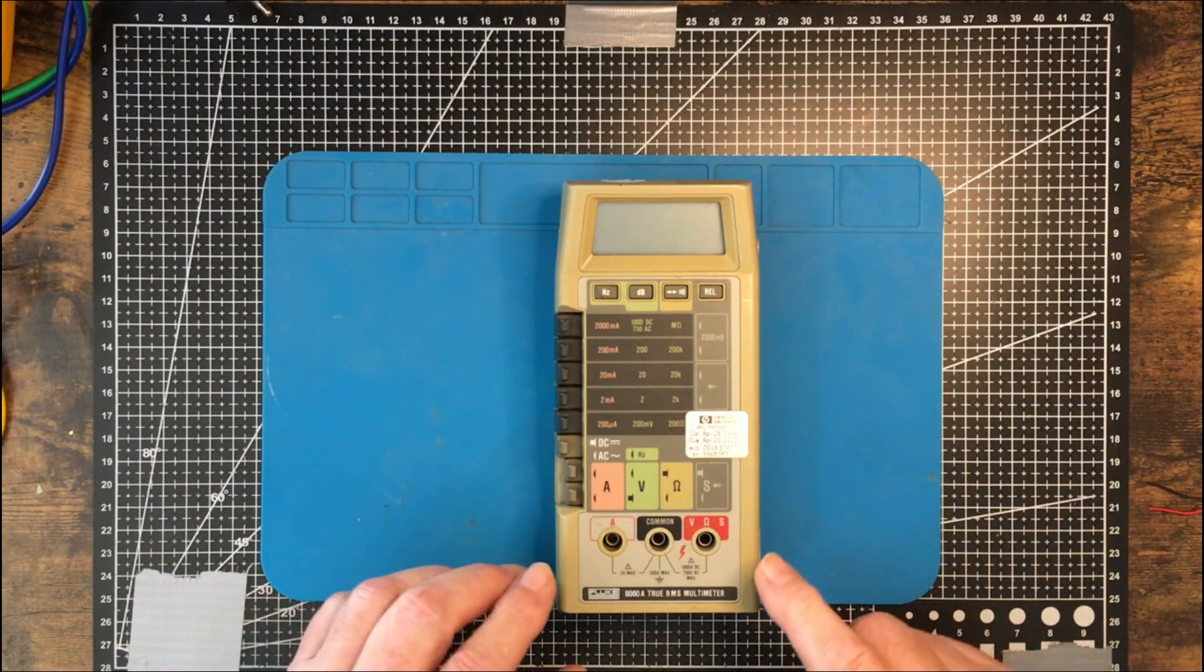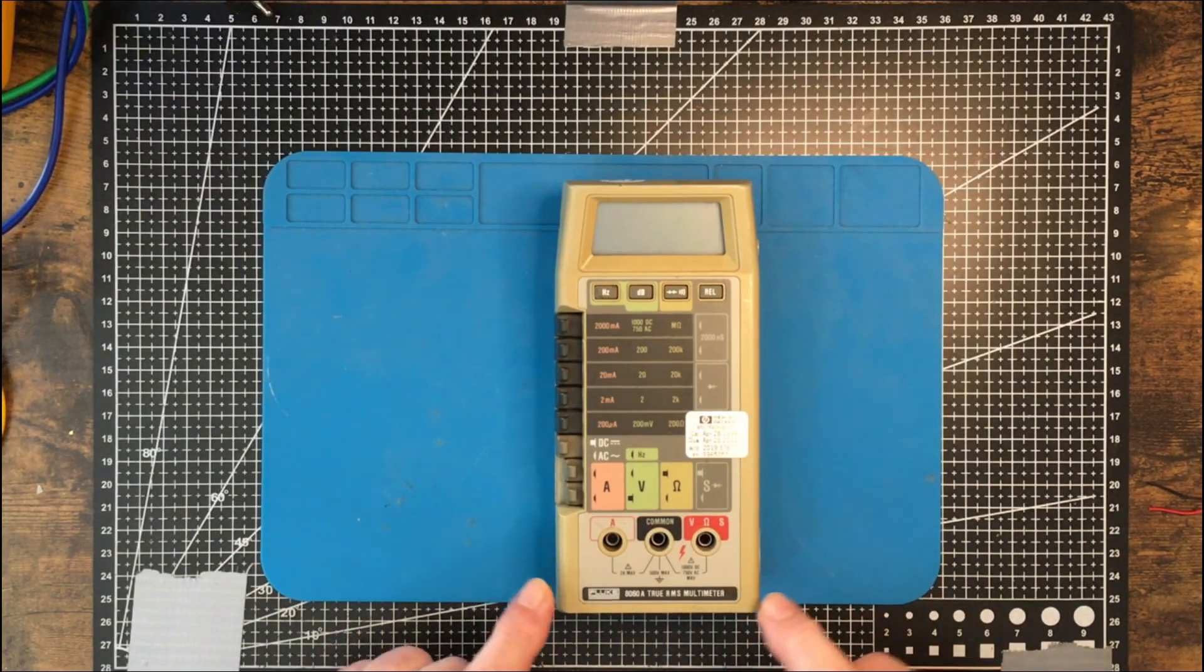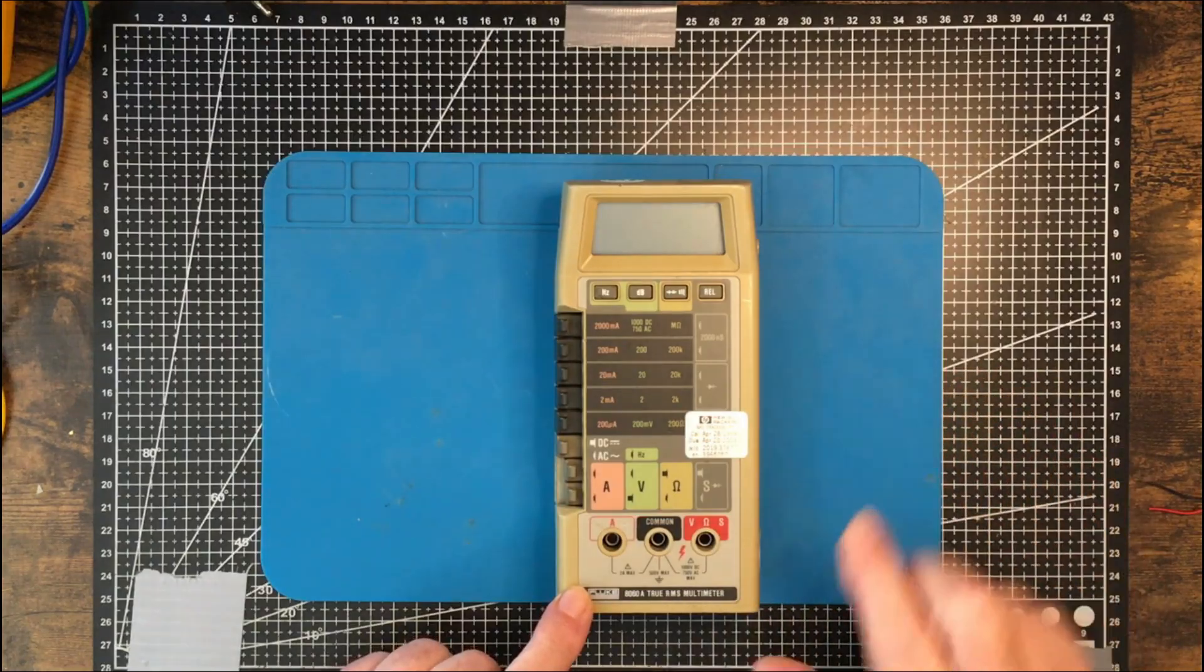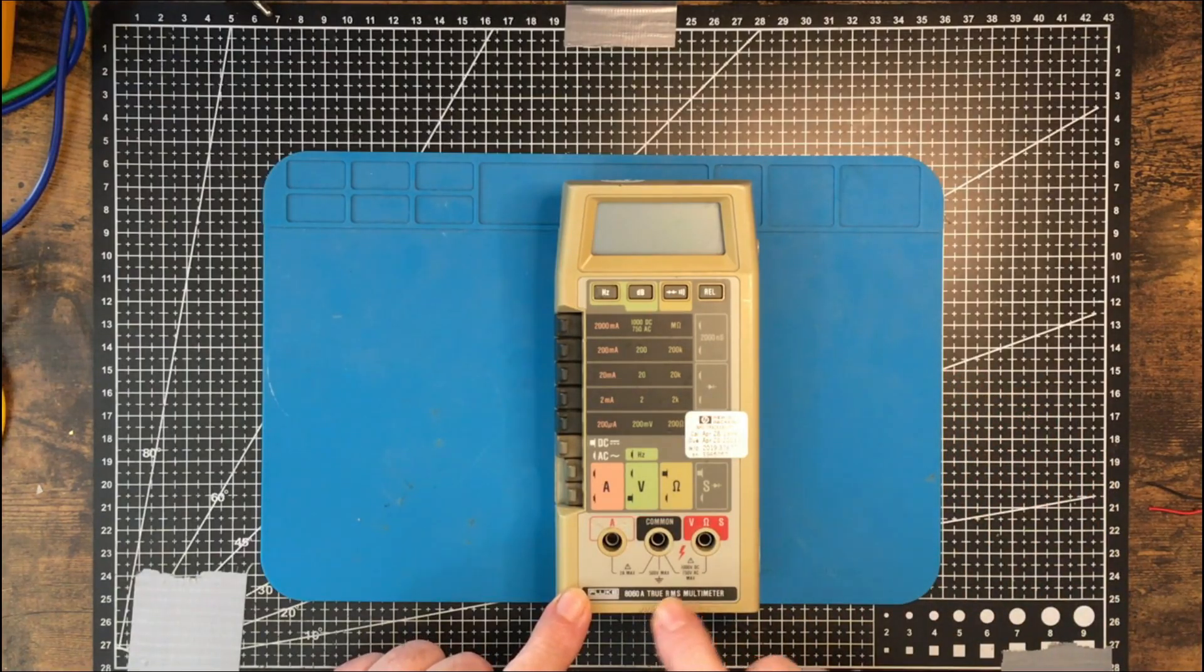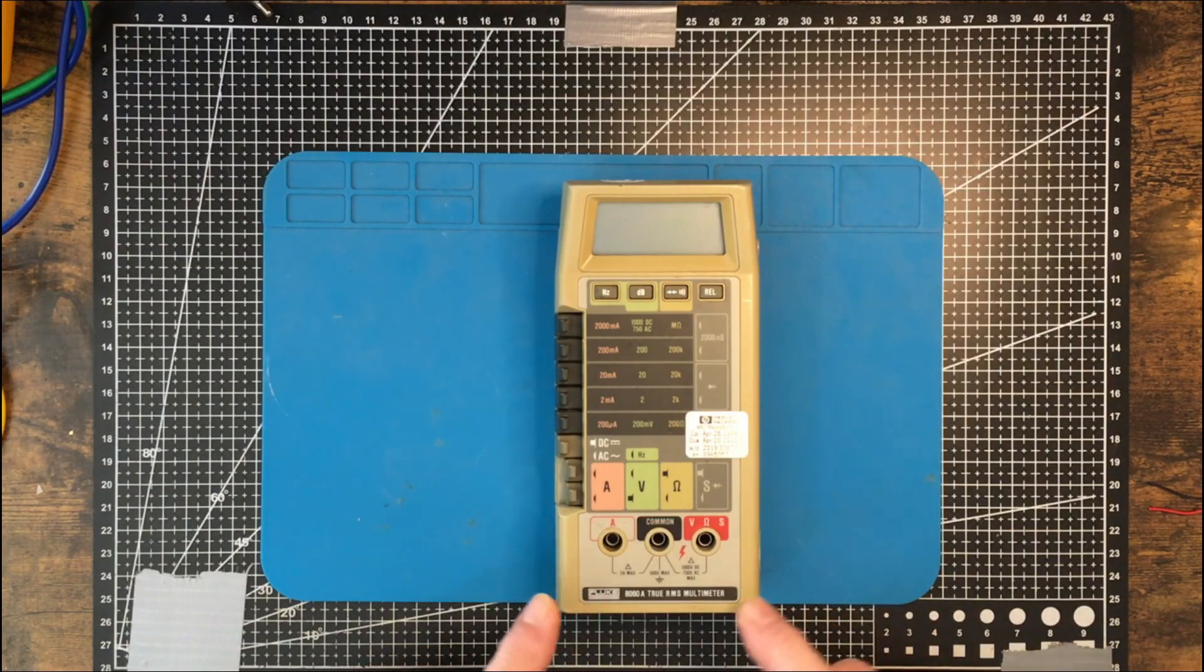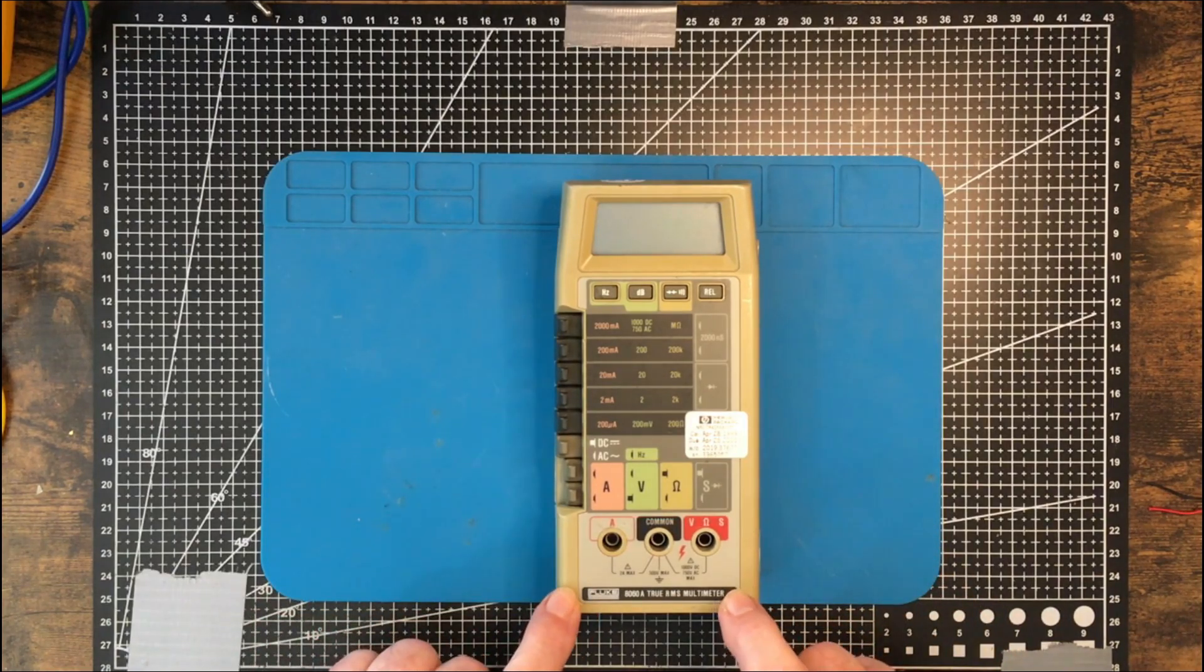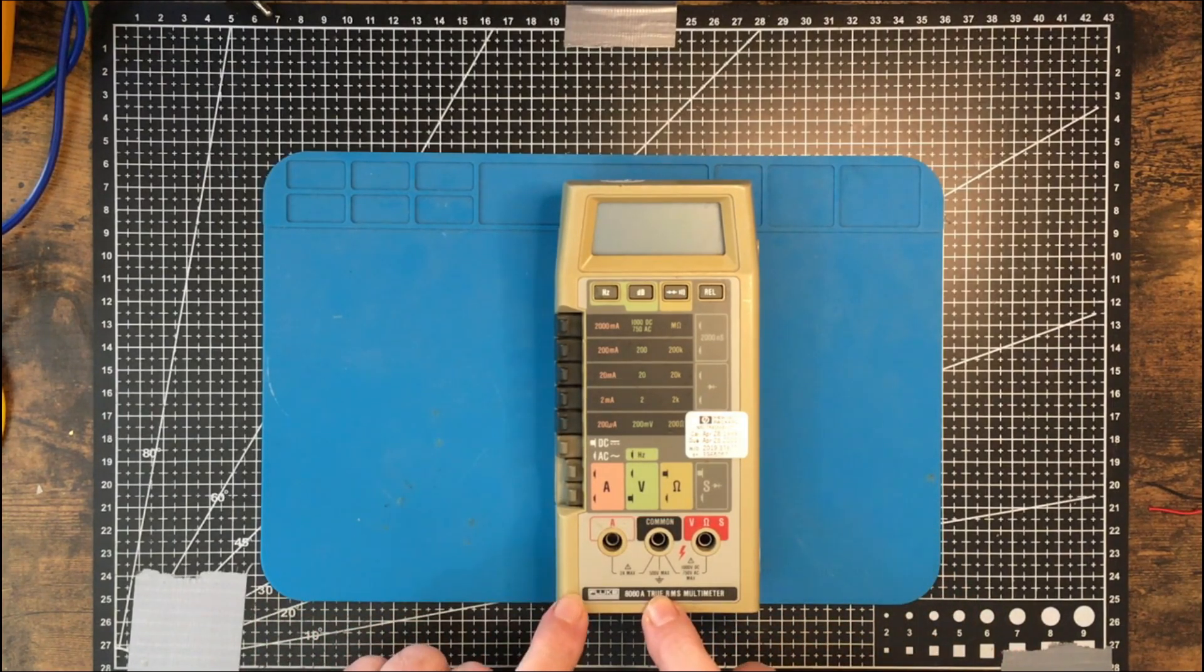And I picked up this Fluke 8060A. Now I got this at a ridiculous price, ridiculously low that is. I've seen these go on eBay for 70-80 dollars US in working condition. They said this was tested and working. We're going to find that out, but I got it for a fraction of that.